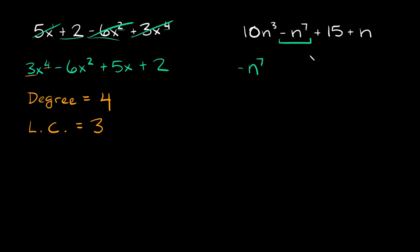That's what goes first. And then the next biggest would be 10n cubed and this is positive, so plus 10n cubed. And then after that we have this n to the first, so then plus n. And then again the constants always go at the end, so plus 15 goes at the end.